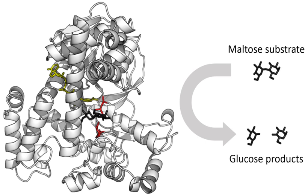Similar proofreading mechanisms are also found in RNA polymerase, aminoacyl-tRNA synthetases and ribosomes. Conversely, some enzymes display enzyme promiscuity, having broad specificity and acting on a range of different physiologically relevant substrates. Many enzymes possess small side activities which arose fortuitously, which may be the starting point for the evolutionary selection of a new function. To explain the observed specificity of enzymes, in 1894 Emil Fischer proposed that both the enzyme and the substrate possess specific complementary geometric shapes that fit exactly into one another. This is often referred to as the Lock and Key model. This early model explains enzyme specificity, but fails to explain the stabilization of the transition state that enzymes achieve.